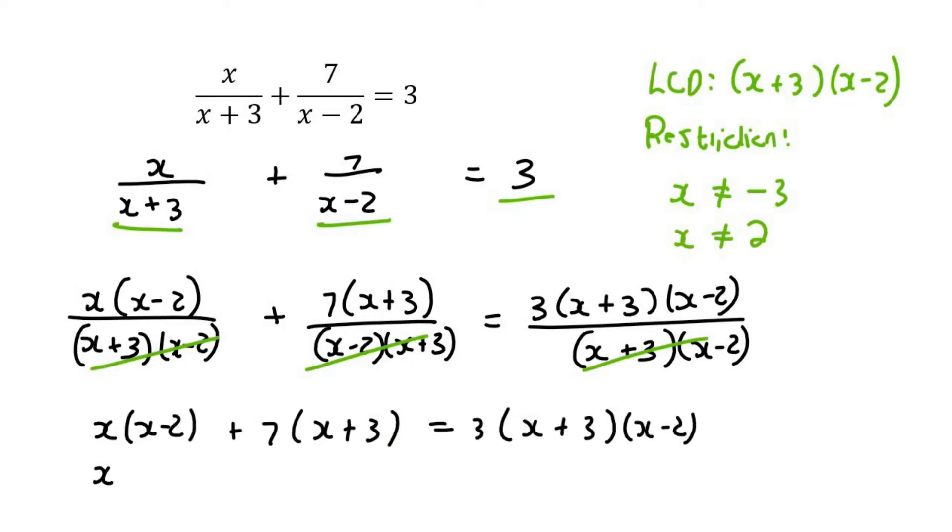Now you multiply everything into x squared minus 2x plus 7x plus 21. Now here's where there's three things, so you leave the three on the outside, and you multiply the two brackets together. So it's x squared minus 2x plus 3x minus 6.